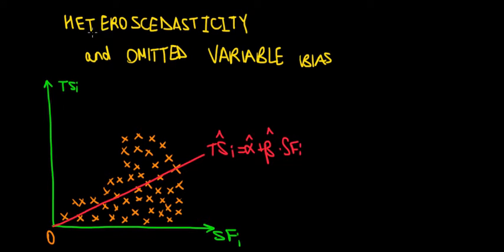In this video, let's have a look at the relationship between heteroscedasticity and omitted variable bias. The keyword here is omitted variable bias.